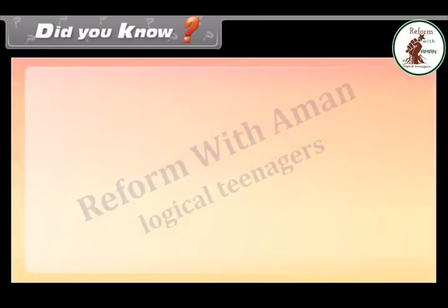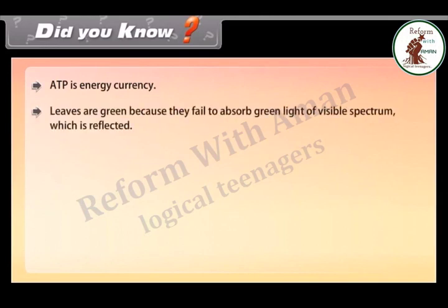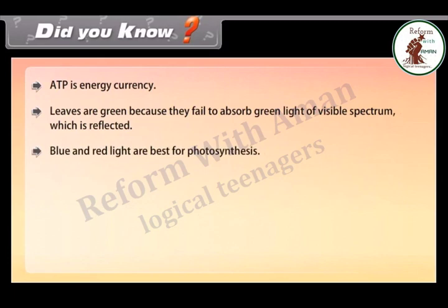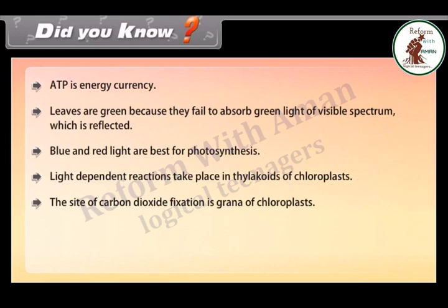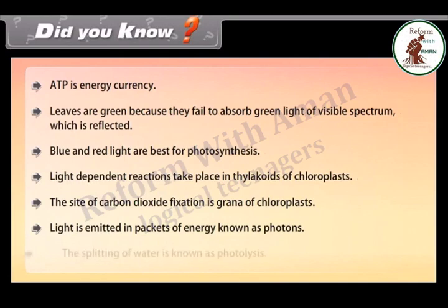Did you know? ATP is the energy currency of the cell. Leaves are green because they fail to absorb green light of the visible spectrum, which is reflected. Blue and red light are best for photosynthesis. Light-dependent reactions take place in the thylakoids of chloroplasts, and the site of carbon dioxide fixation is the grana of chloroplasts. Light is emitted in packets of energy known as photons. The splitting of water is known as photolysis.